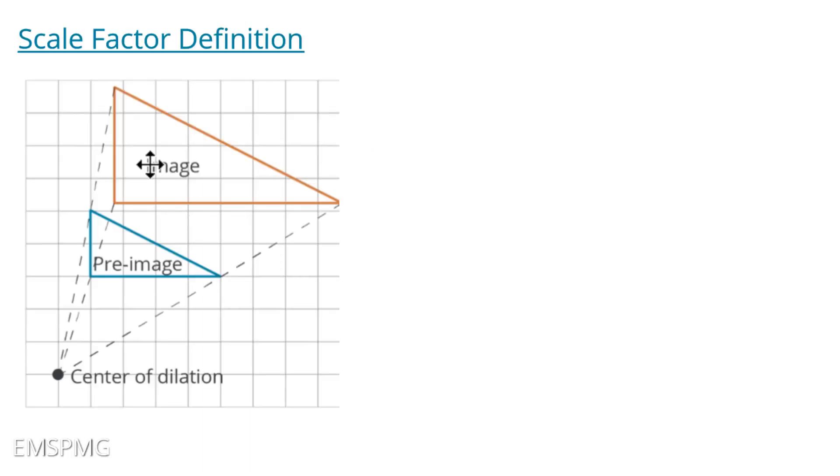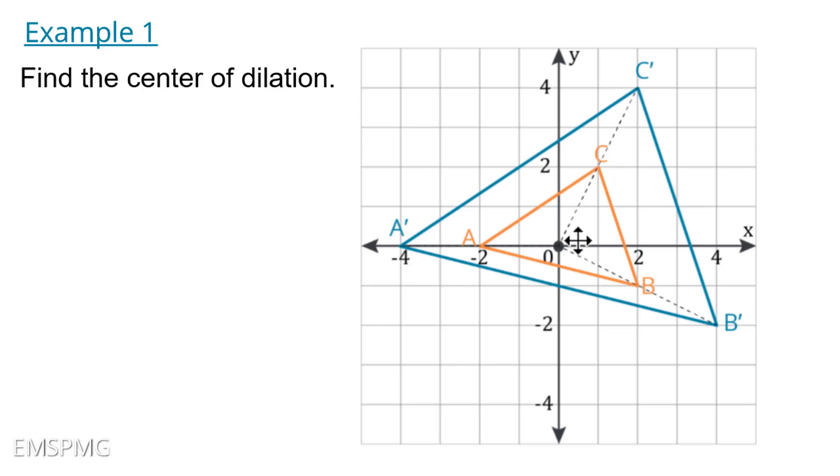So just a visual example here, we got the scale factor. So this image is being created from the dilation of this pre-image and it's being scaled from this center of dilation here, right? So if we want to find that center of dilation, what you need to do is visually draw a line between the corresponding points.